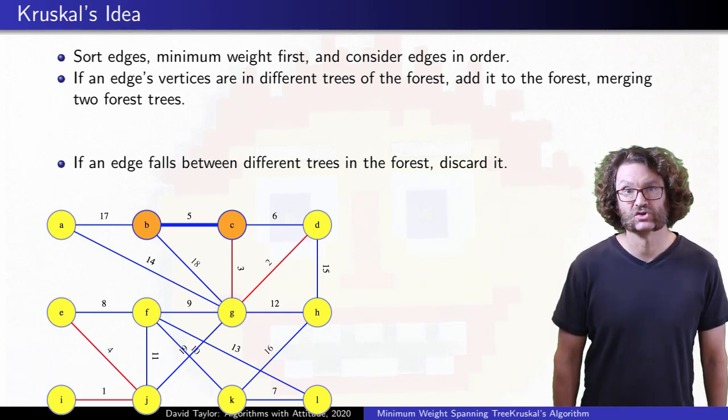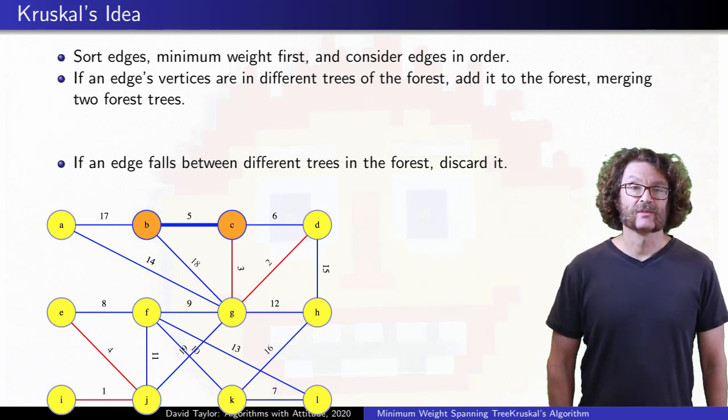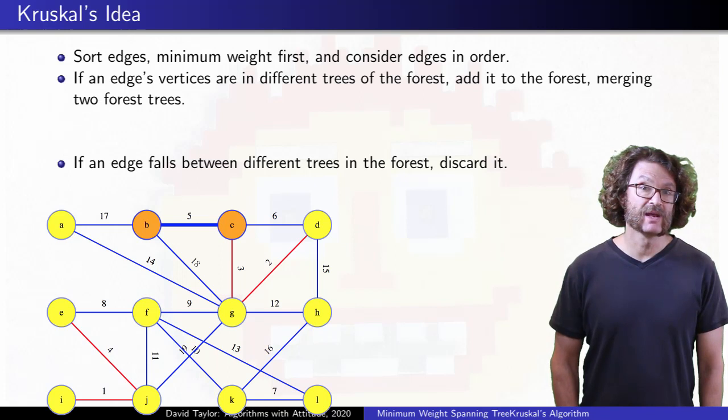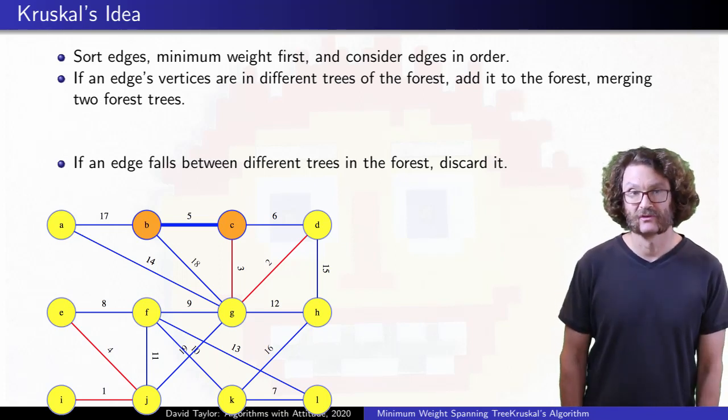Consider either of the trees it connects, say CGD. The claim is that edge 5 is the minimum weight edge crossing the cut from that tree to the rest of the graph.